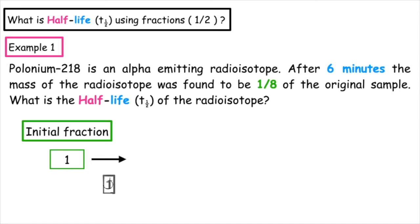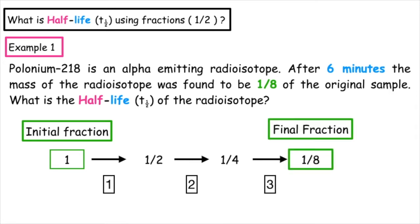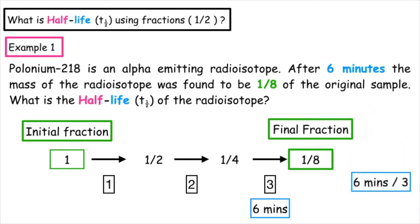It undergoes one half-life to produce a half. This will have to undergo a second half-life — half of a half is a quarter. A third half-life will give us an eighth, so this underwent three half-lives. If the total time taken was six minutes, we do six minutes divided by three half-lives, which means each half-life is a total of two minutes.